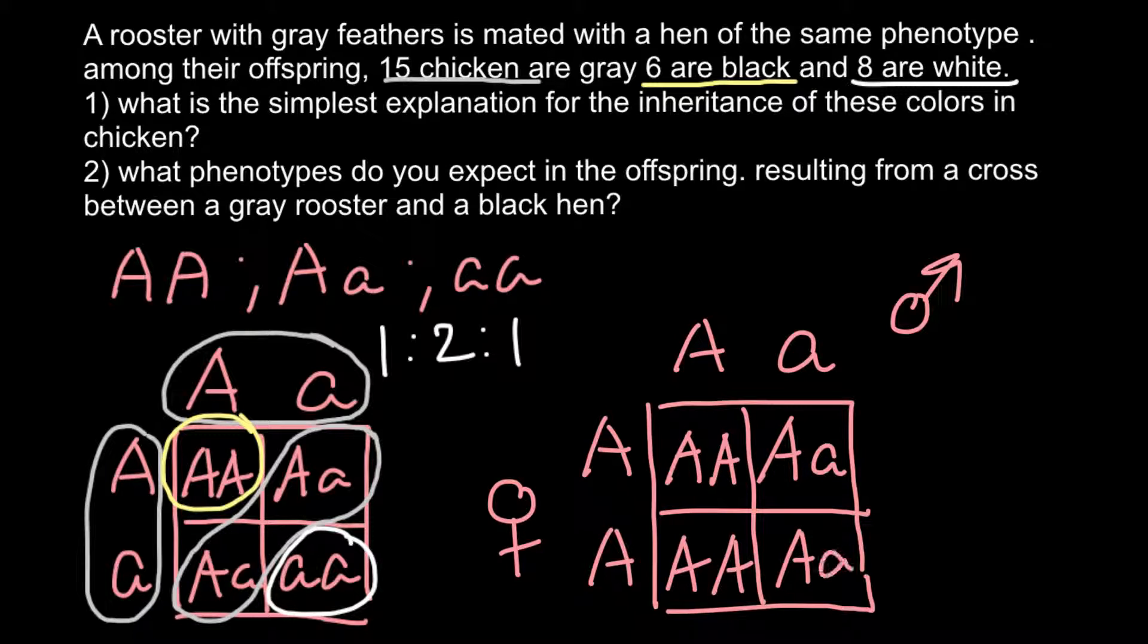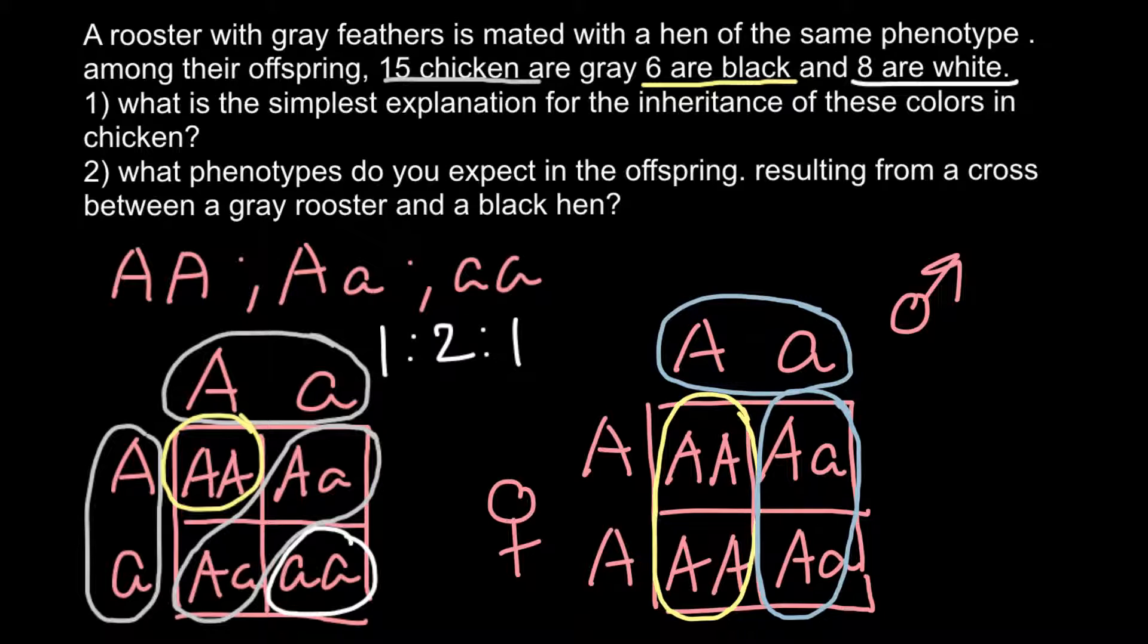As you see, 50% of the progeny are going to be black and 50% of the progeny are going to be gray. So gray rooster crossed with black hen, and the ratio would be 1 black to 1 gray. And this is not sex-linked, so both hens and roosters can be black or gray.